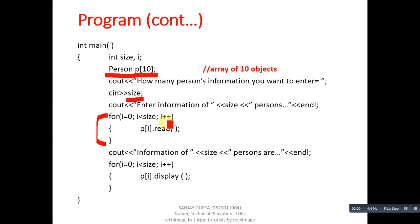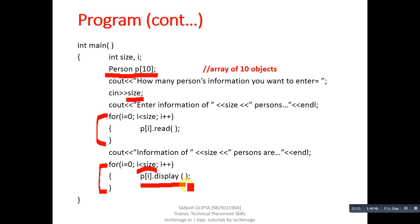Then i++ makes i equal to 1, so `P[1].read()` reads the next person's information, and so on. If size is 5, the loop repeats 5 times, meaning you enter age and name of 5 persons. Then to print the entered information, another for loop is used, repeating size times. `P[i].display()` is called, printing the information stored at each index.